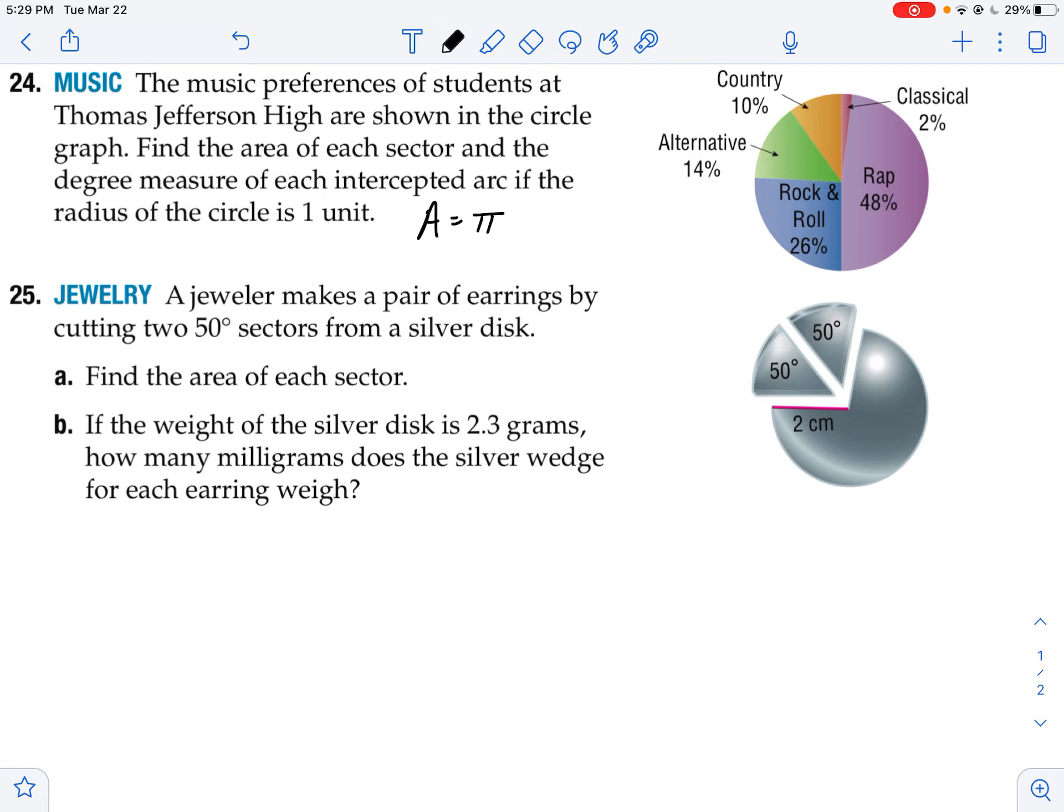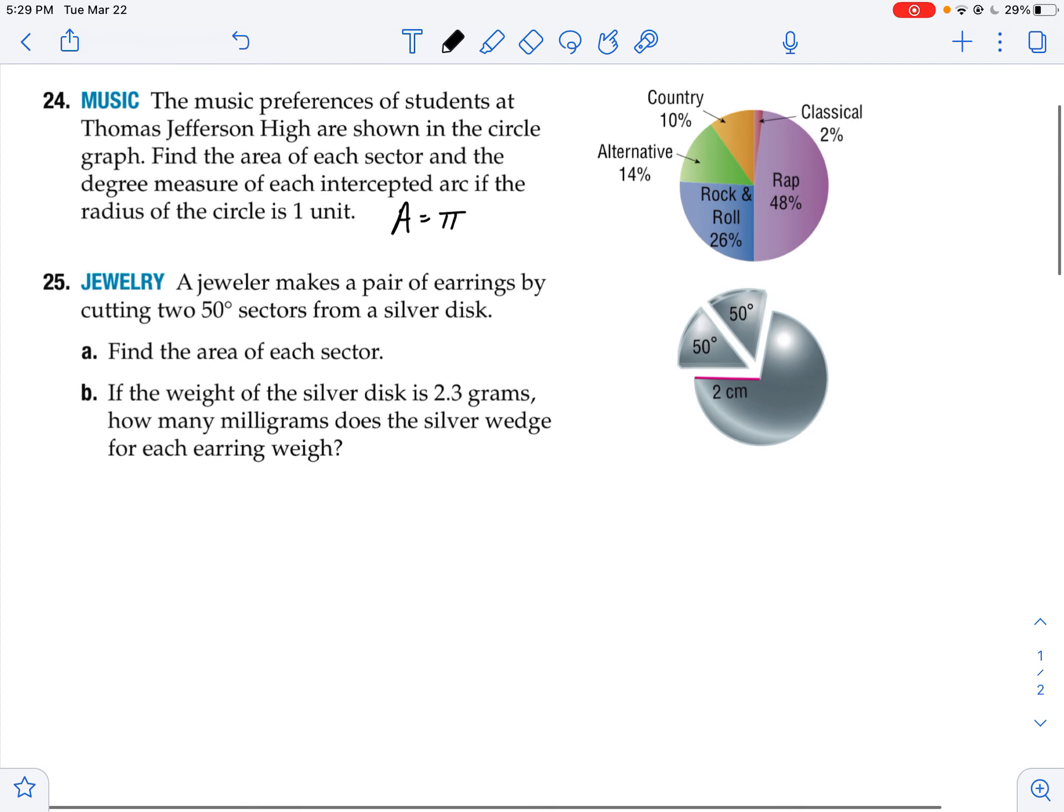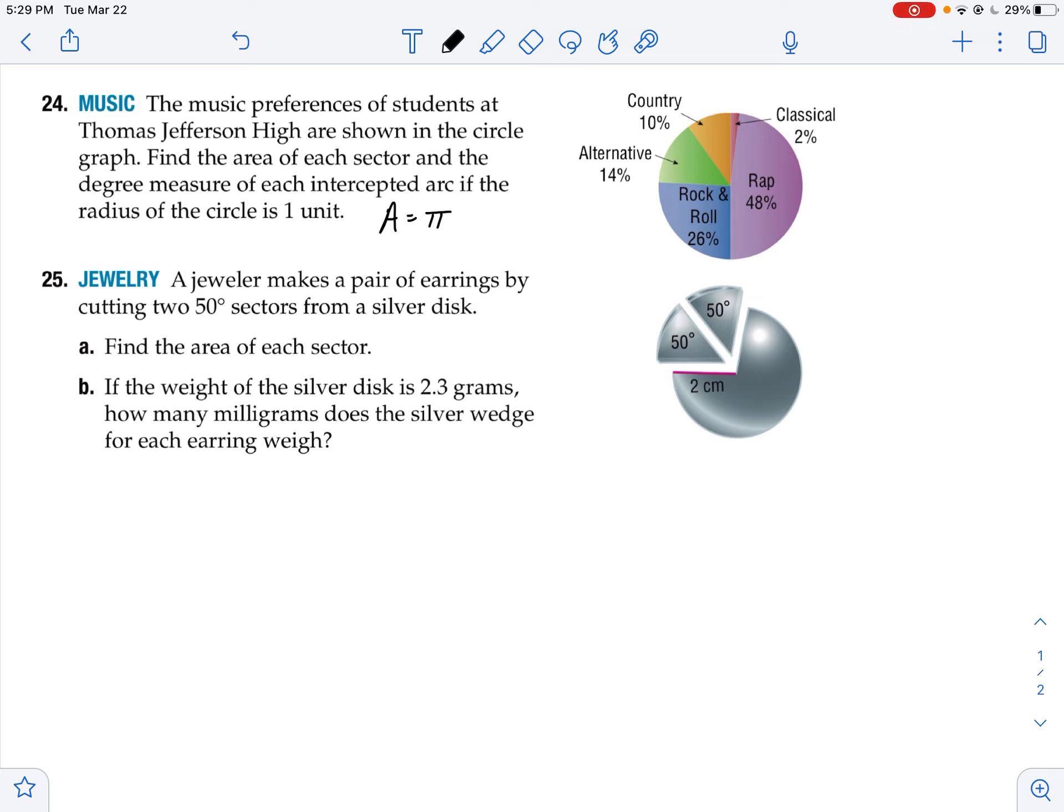So the area is pi. I want to find the area of each sector and the length of each arc. So if I want to find the area, let's say of rap, what I would do, let's do just rap and maybe country. So rap would be pi times 48%. So it's 48% and not 48 degrees.